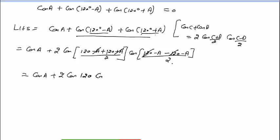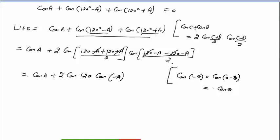And here we have cos minus A. 2 cancel हुआ, minus A रहा। और आपको पता होना चाहिए, ये जो cos(minus theta) होता है, इसको हम लेते हैं cos(0 minus theta), तो cos theta ही आता है। Fourth quadrant में cos positive होता है, तो cos(minus theta), cos theta के equal होता है।